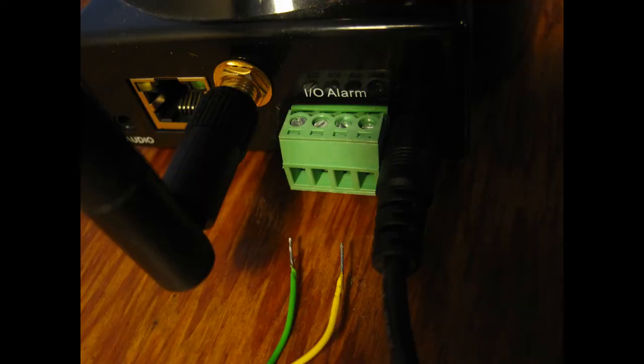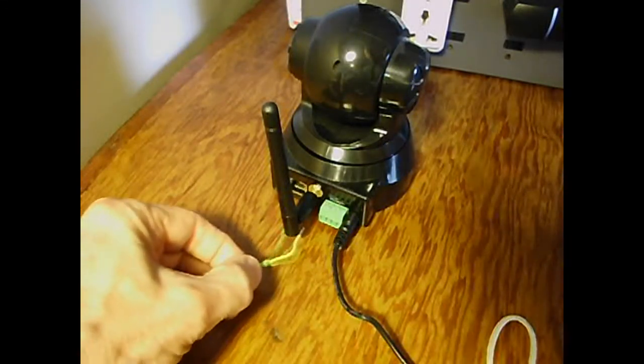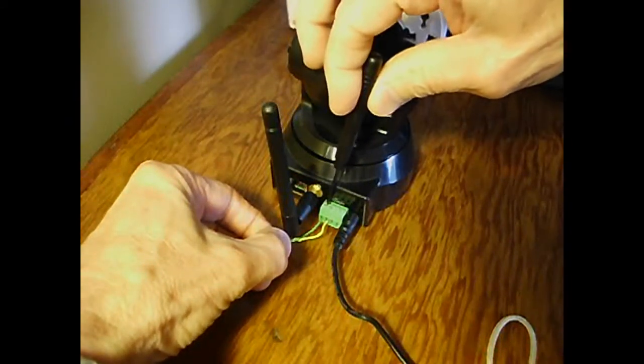It's time to connect our wires to our IP camera. The green connector on the back, the left two connections, are for the relay contacts. There is no polarity involved as it is just a contact.